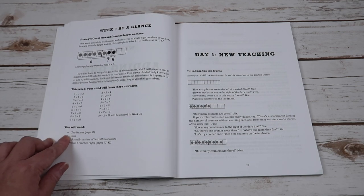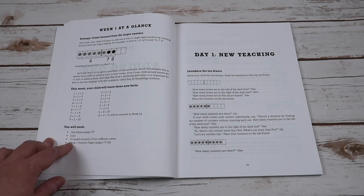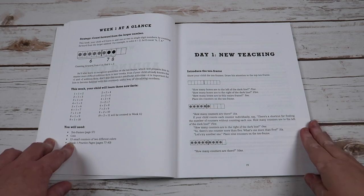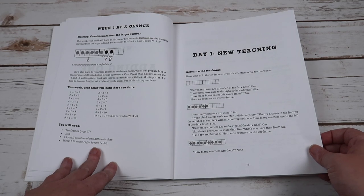So for instance, for this one, you're going to need the 10 frames, which is in the back of the book, a coin, 15 small counters of two different colors of some kind, and then the practice pages, again, that are in the back of the book. They give you the new teaching on day one. So you're going to spend day one doing the new teaching.